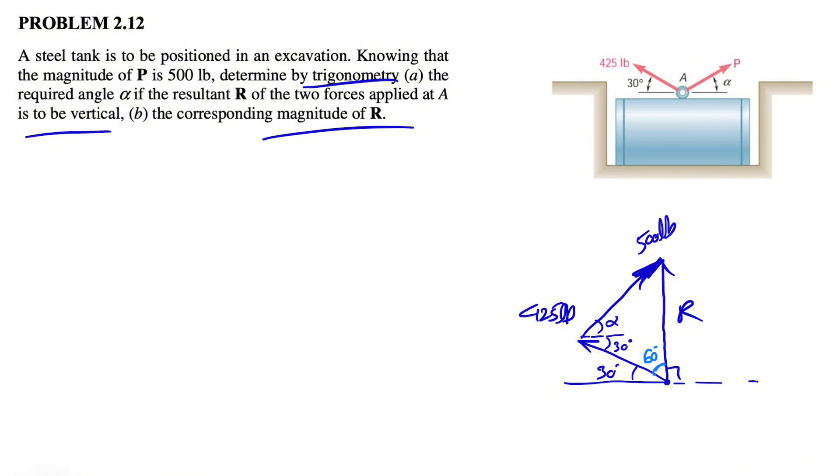If you want to find the other angle that we have in here, let's call it beta. We know that the sum of all the angles in a triangle is 180, so basically beta plus alpha plus 30 plus 60 degrees has to be 180 degrees.